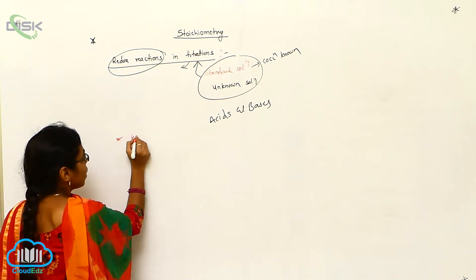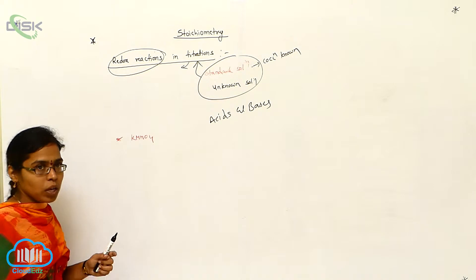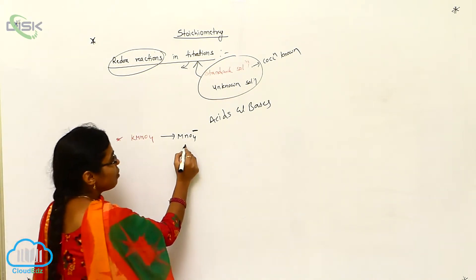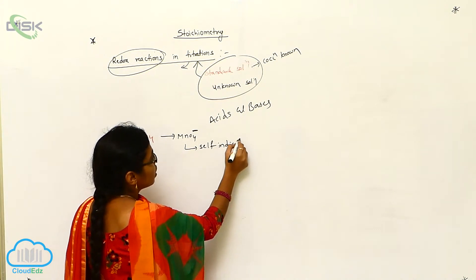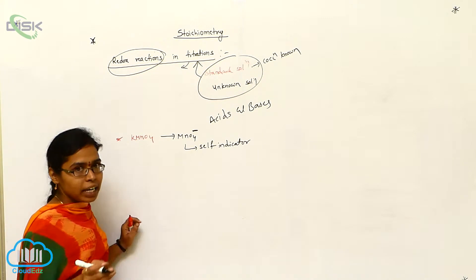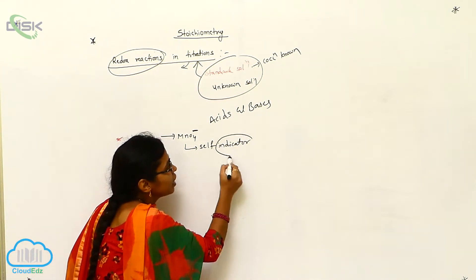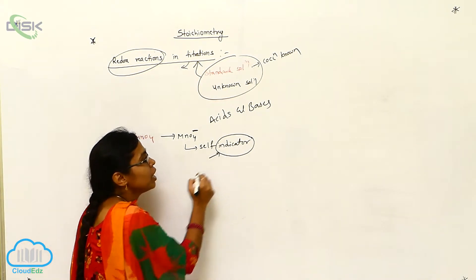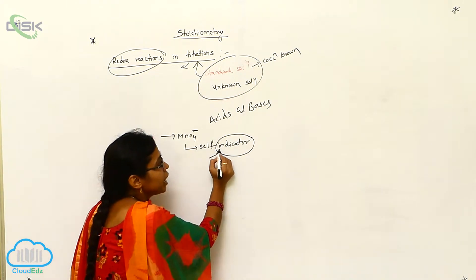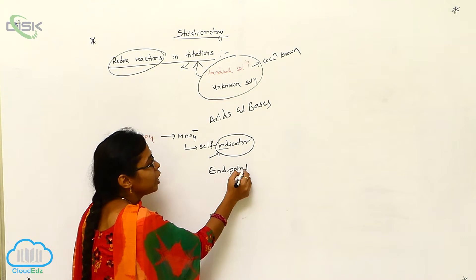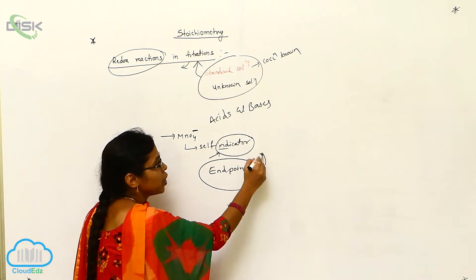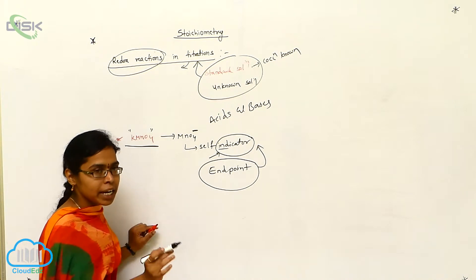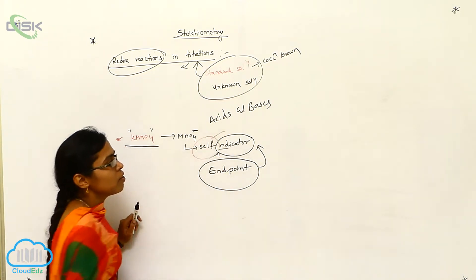You already know the formula for potassium permanganate, KMnO₄. In KMnO₄, the manganate ion MnO₄⁻ is always present. It can work as a self-indicator, meaning we do not need to add any external color substance or indicator. An indicator tells us where the reaction is completed — it denotes the end point. For potassium permanganate titration, we do not use any indicator because KMnO₄ itself works as a self-indicator.